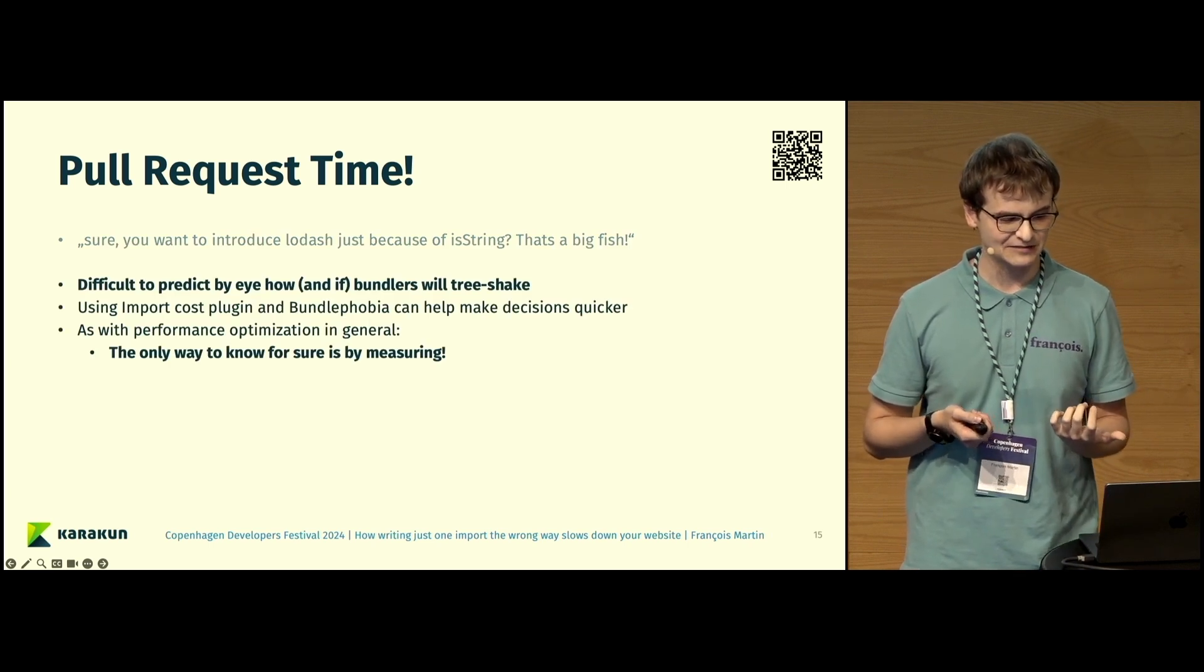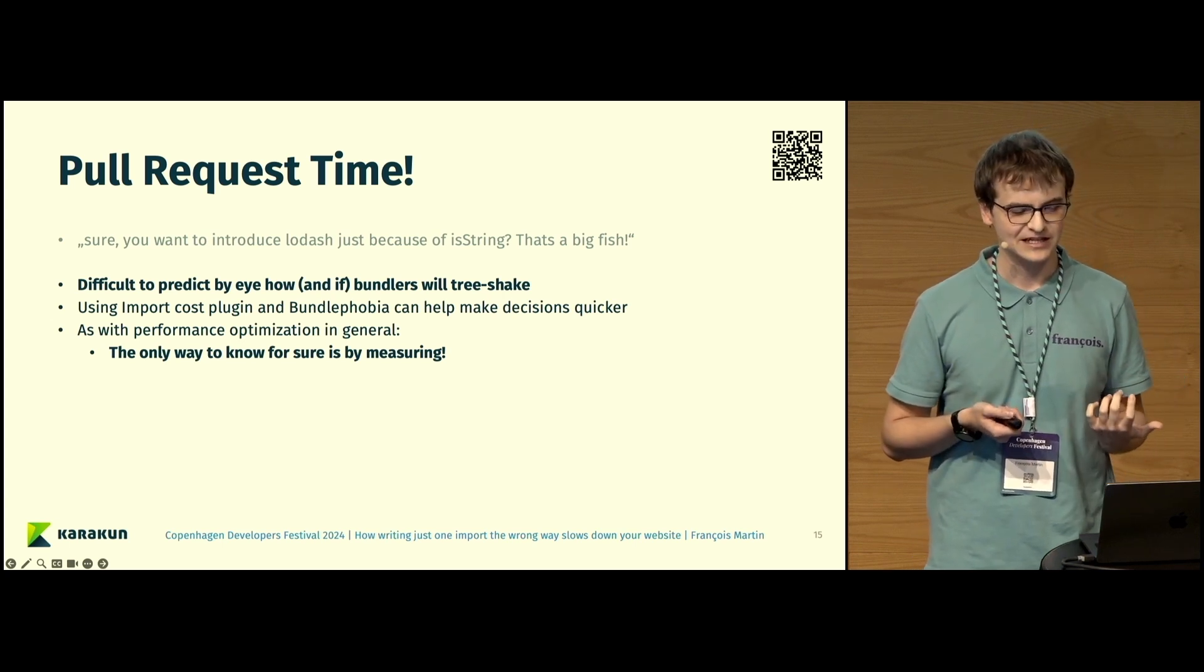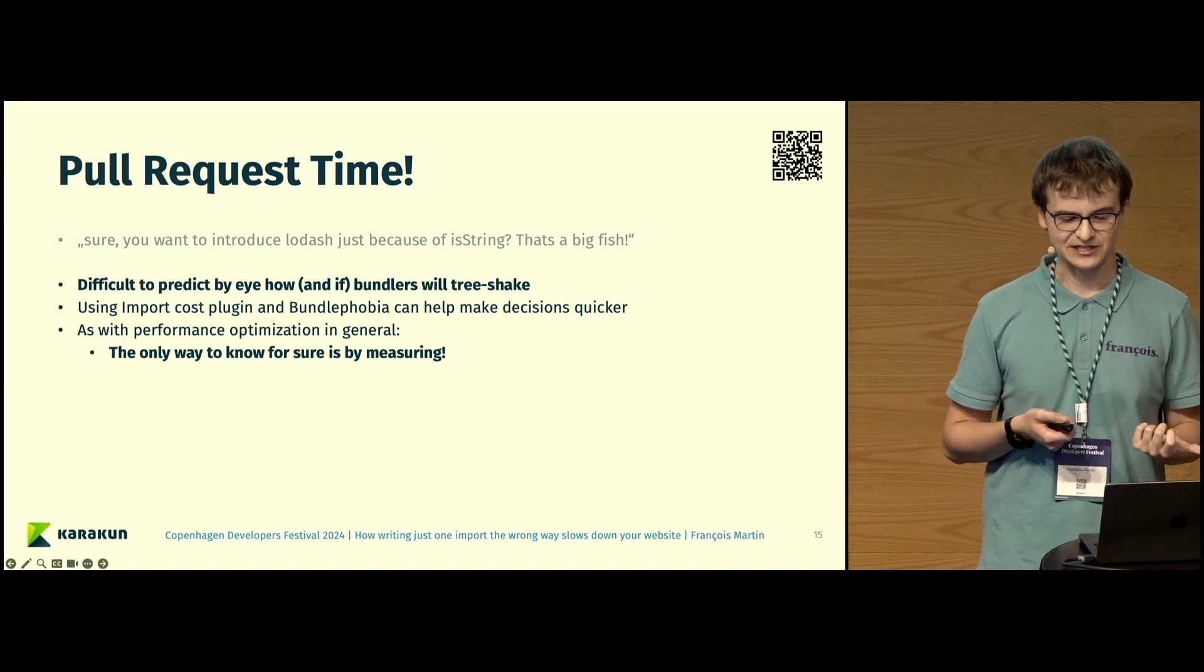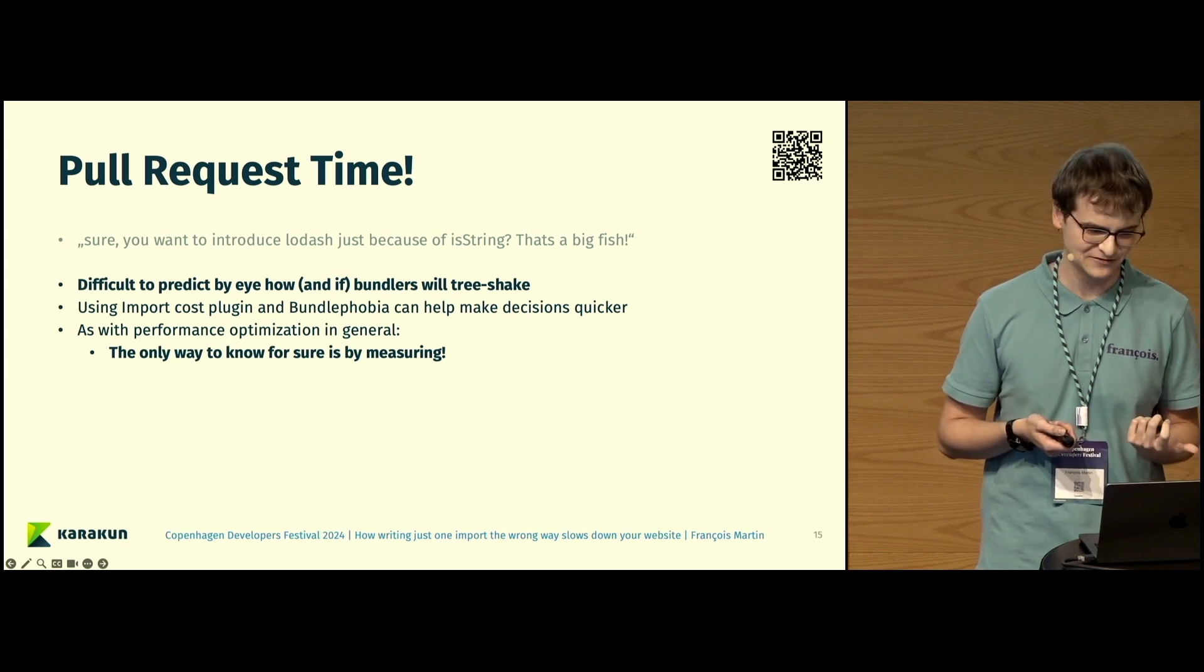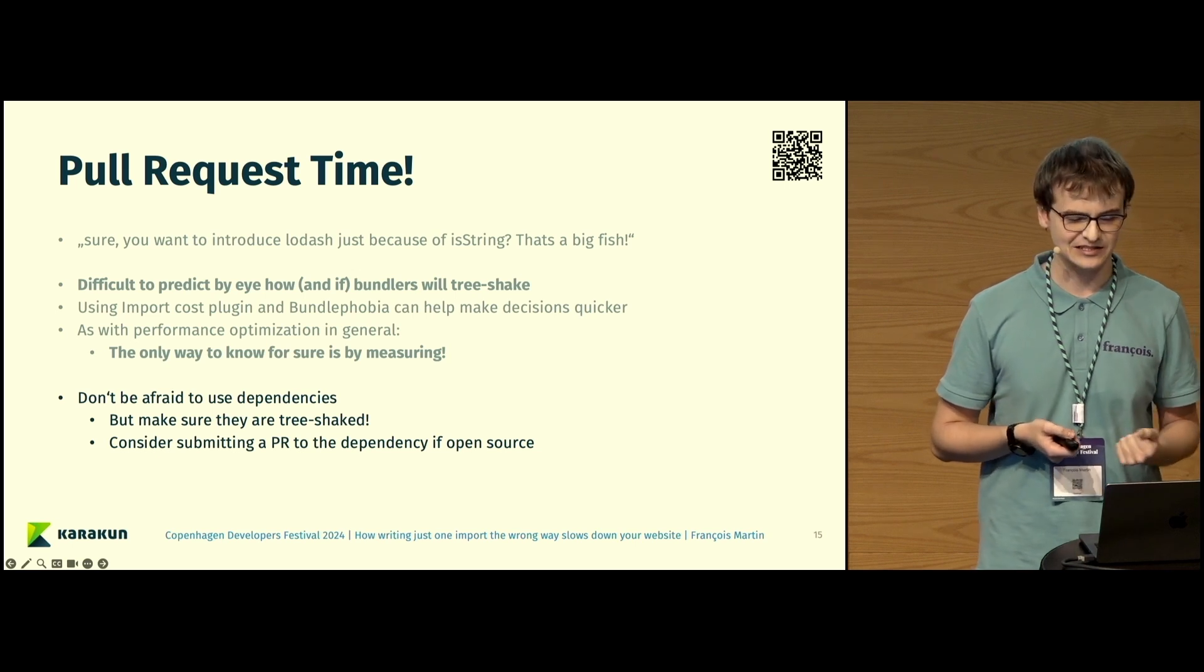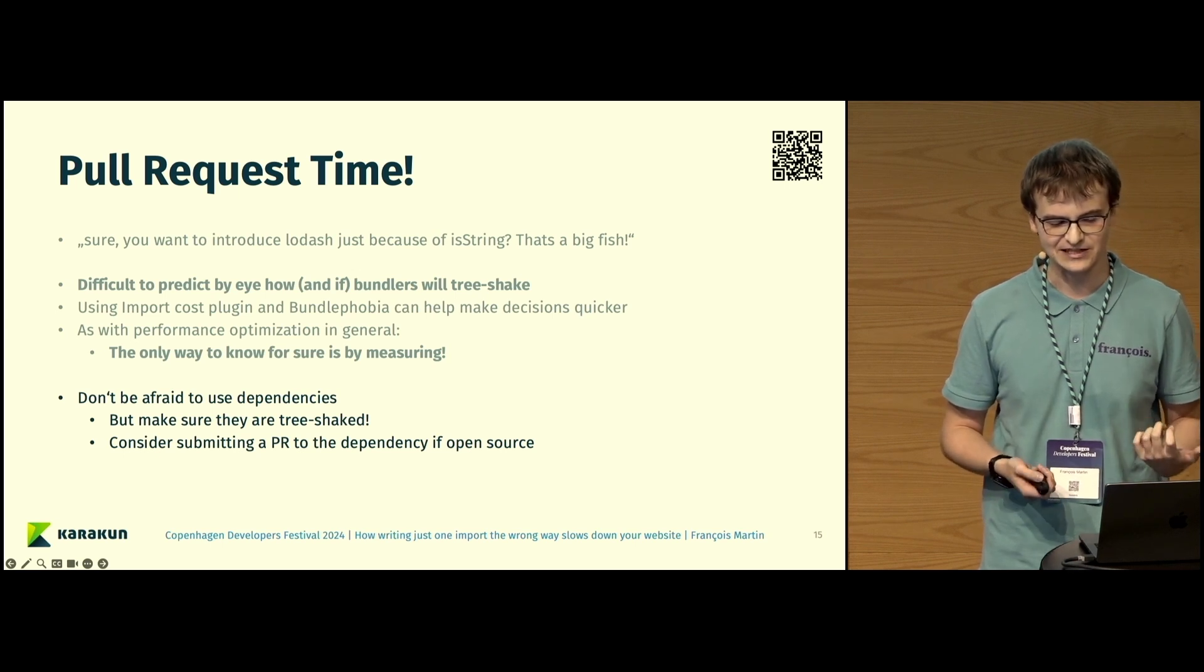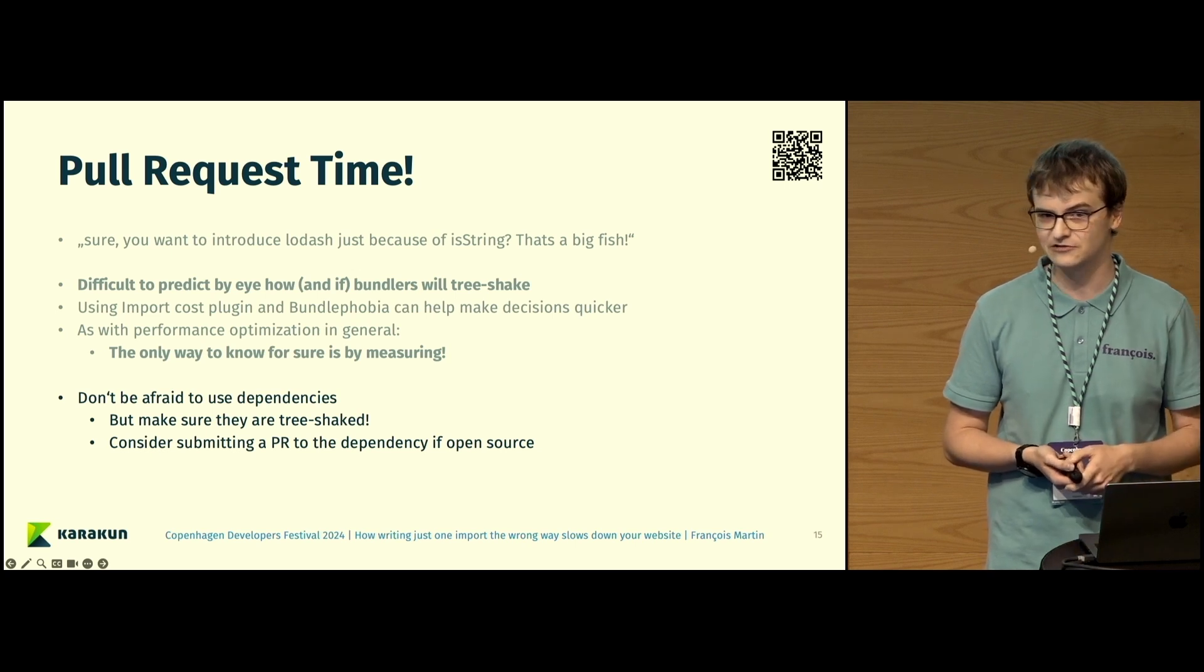Just to sum up, it's a bit difficult to predict by eye how and if the bundlers will tree-shake something, and using the import-cost plugin and Bundle Phobia can help you make this decision quicker. As with performance optimization in general, the only way you can know for sure is by measuring. Of course, it comes down to this. Also, don't be afraid to use dependencies, but make sure that when you use dependencies they can be tree-shaken. If it is not possible, then consider submitting a pull request to the dependency if it's open source to make it tree-shakeable.